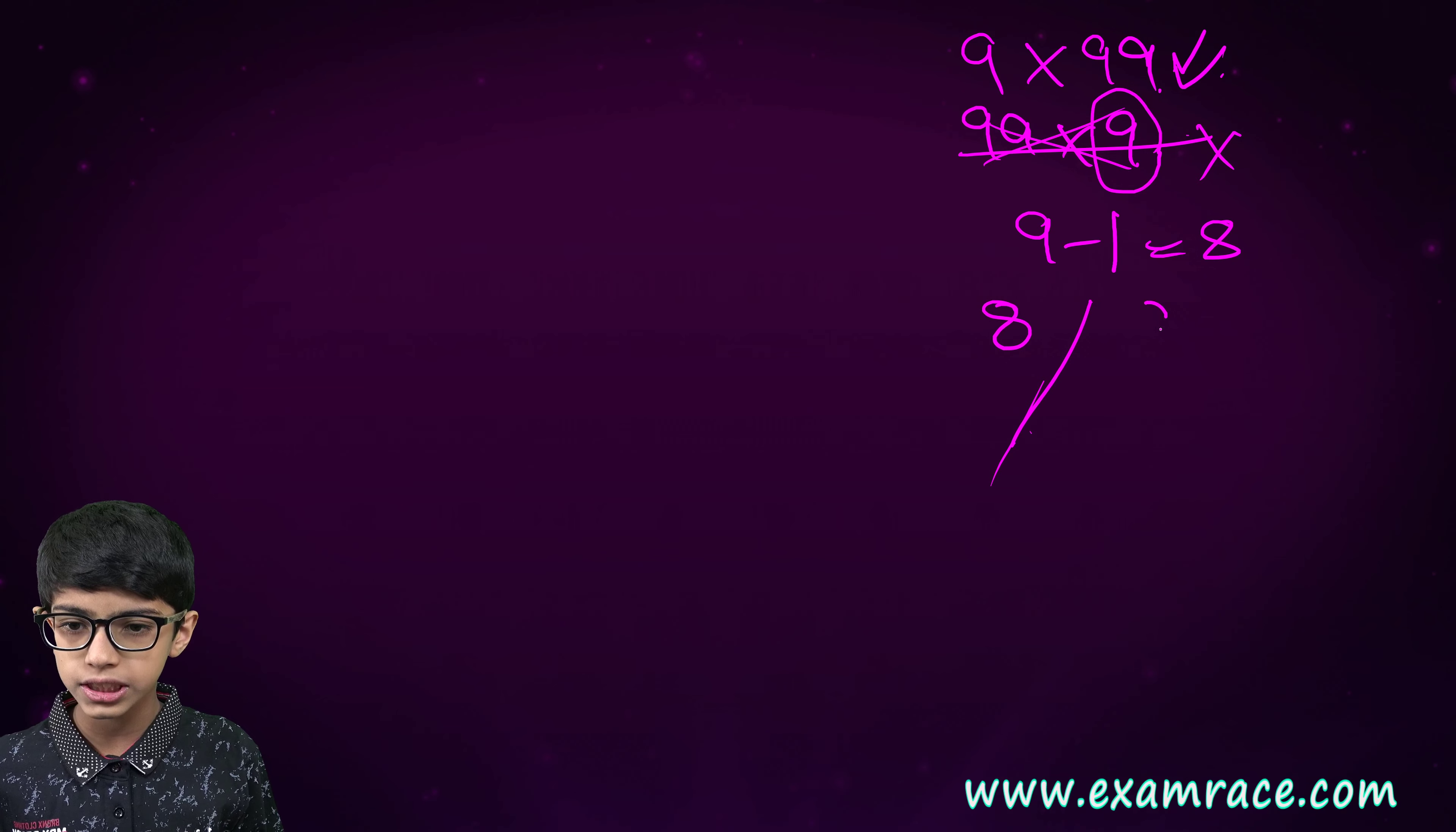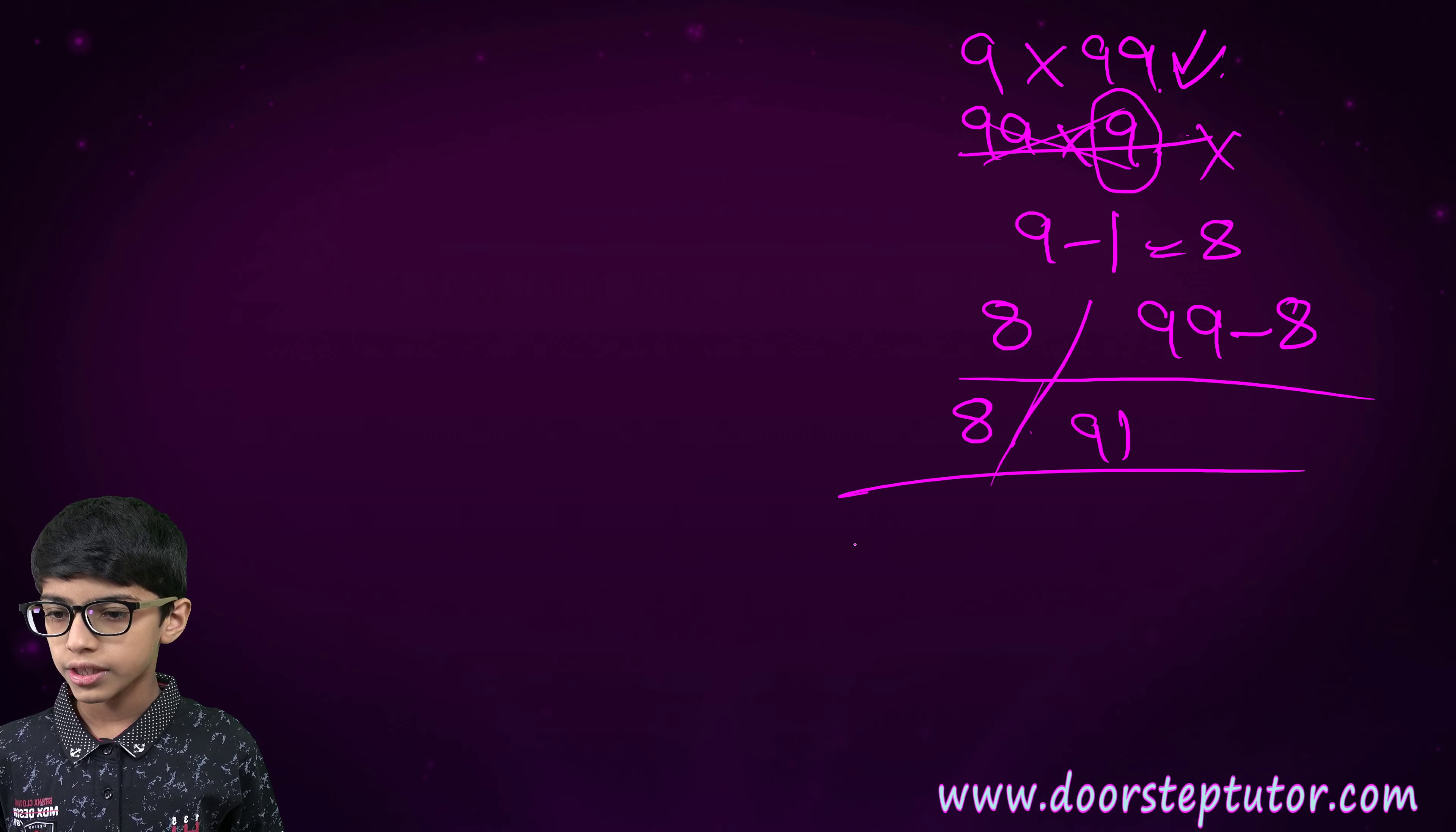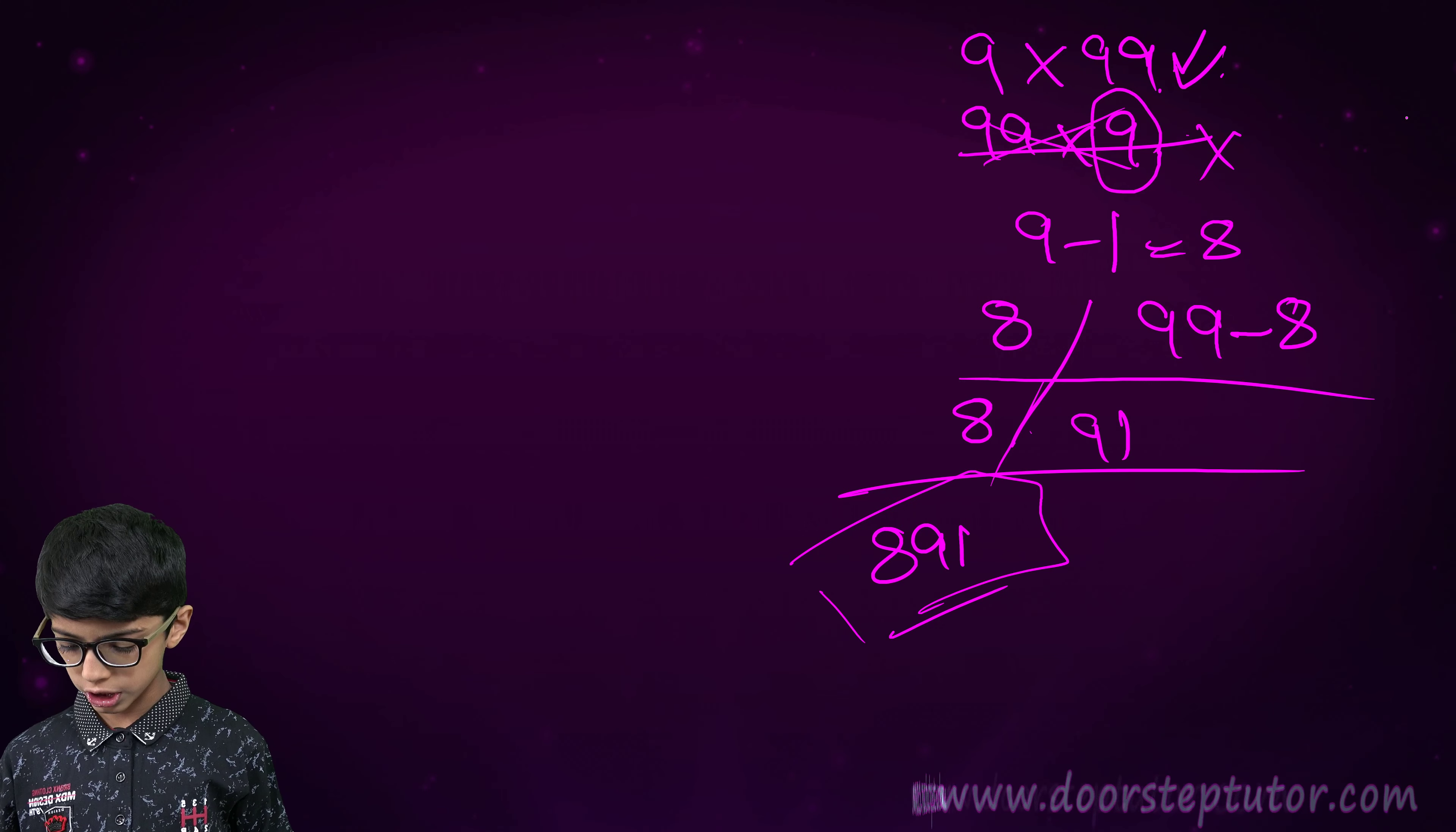Now, we will solve this. 99 minus 8 is 91. Therefore, our final answer is 891. We can also try it on a paper and a pen.